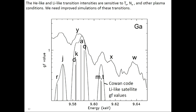Here's the experimental spectrum. These are the Cowan code GF values for these letter designations from the previous table. I would like you to remember the M and T satellite transitions — fix this in your memory: M and T.